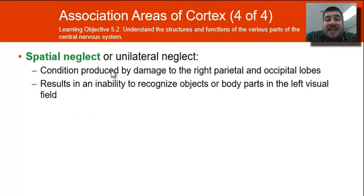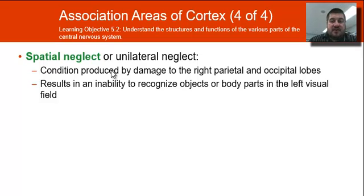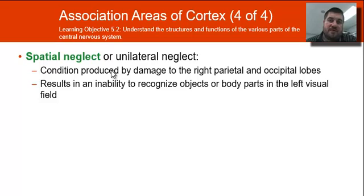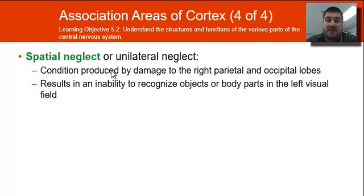Spatial neglect is a condition that happens when there is damage to the right parietal and occipital lobe. It means that you won't be able to see objects in your left visual field — you can't see objects to your left.